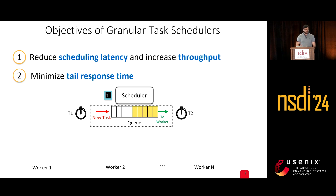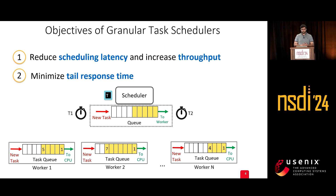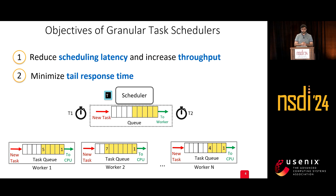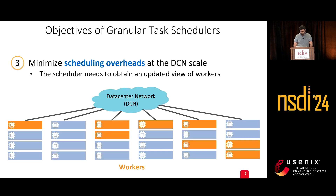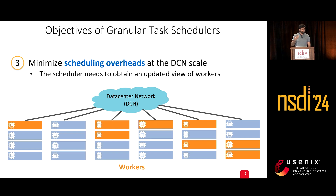More importantly, the objective is to minimize the tail response time. If a task arrives at a CPU and sees a lot of tasks ahead of it, it will take a long time to reply to the client, increasing the tail response time. Finally, since we are working at data center scale, we also want to minimize scheduling overheads, as schedulers need to maintain a fresh view of all workers in the network.